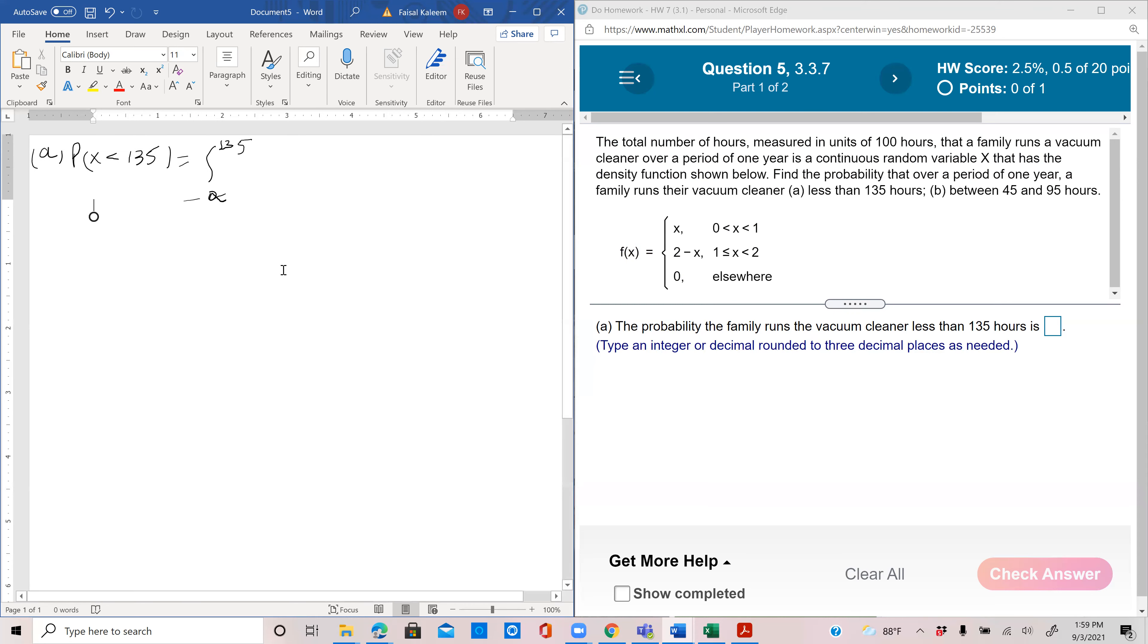You want all parts of the number line that is less than 135, so negative infinity to 135 of fx dx. But from negative infinity to 0 it's 0 because they say that between 0 and 1 it's x, and between 1 and 2 it's 2 minus x, and elsewhere it's 0. So you would break it up into negative infinity to 0.